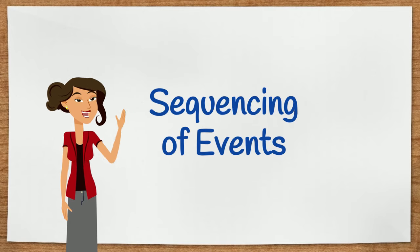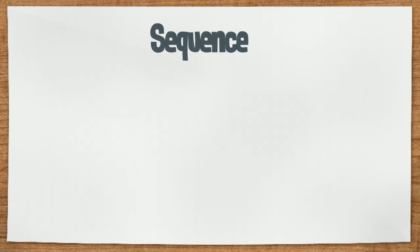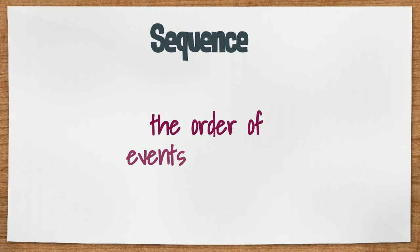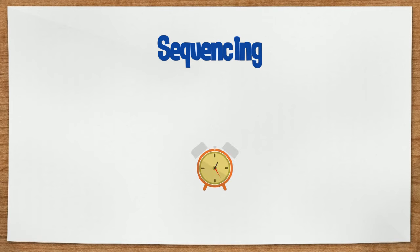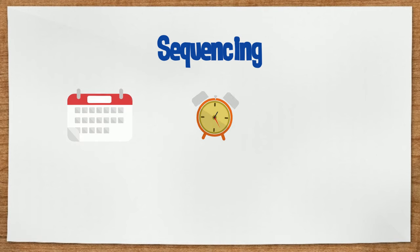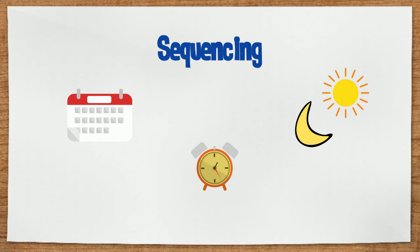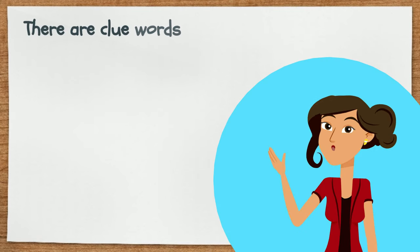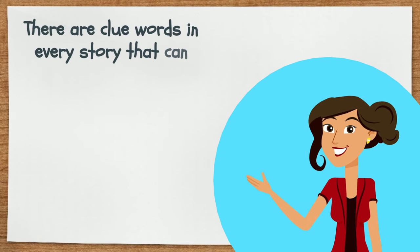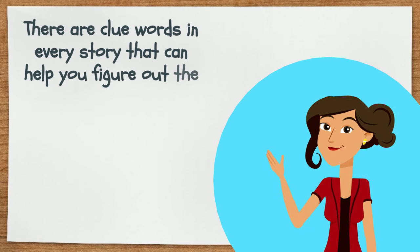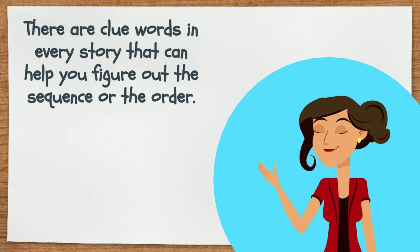Sequencing of events. A sequence is the order of events in a story. Sequencing is putting the events in a story in the order in which they took place. There are clue words in every story that can help you figure out the sequence, or the order.